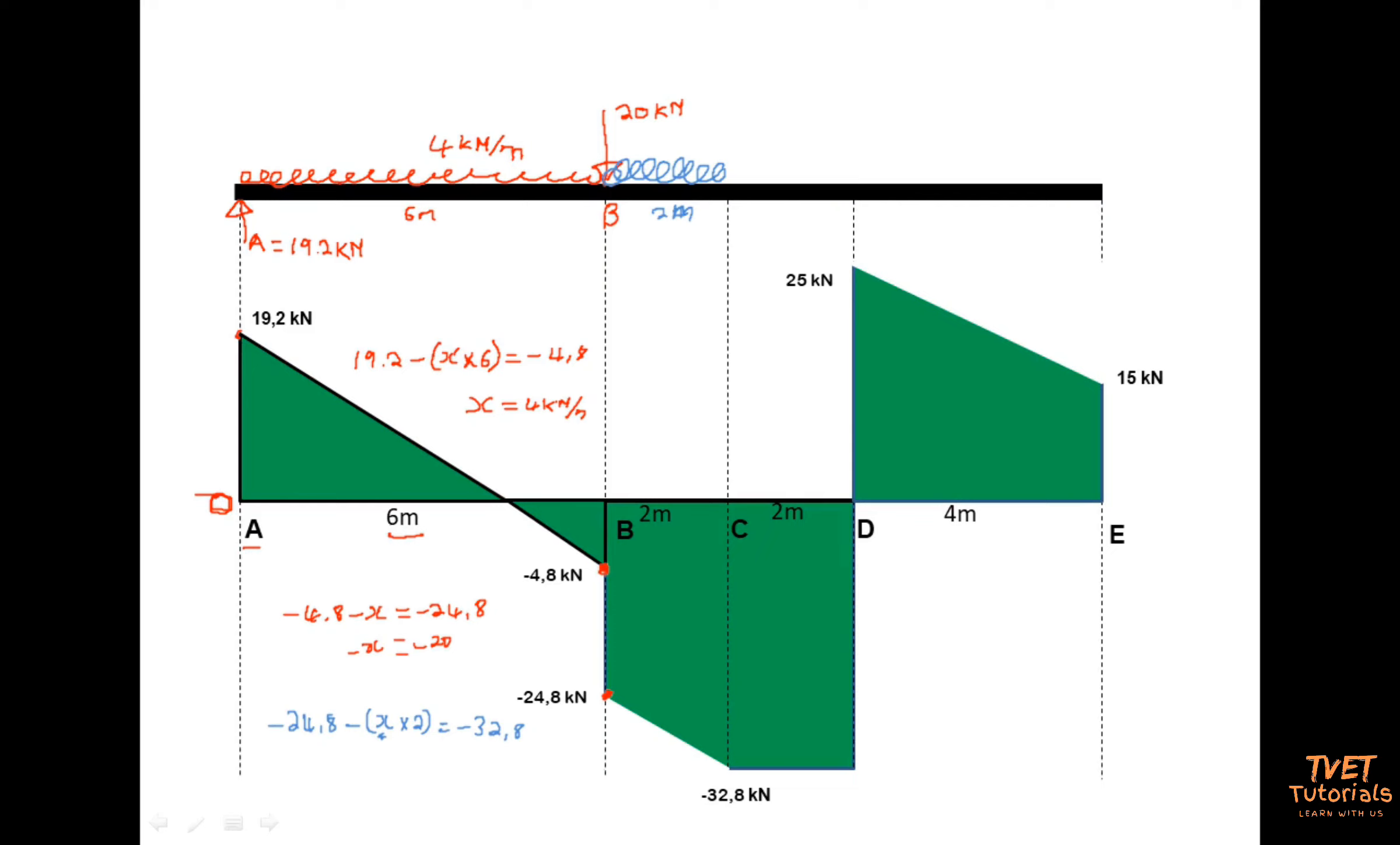Then I move 24.8 to the other side. It becomes positive. Then I say negative 32 plus 24.8. I get a negative 12. Then I divide 12 by 2. Then I get 4. So now I see that the UTL that I have here is 4 kilonewtons per meter. So it is the same UTL that I had from A to B.